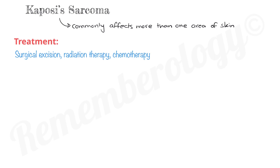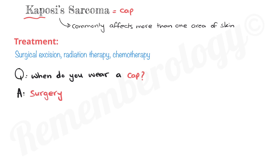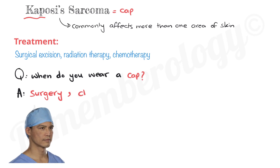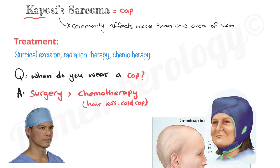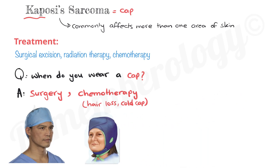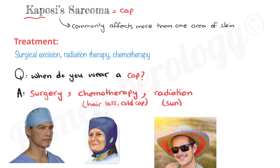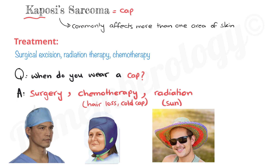Let's see how we can remember the treatments. Kaposi's sarcoma equals 'cap' — so when do you wear a cap? First, in surgery, whether you are the patient undergoing surgery or the surgeon. A patient also wears a cap in chemotherapy, either because they've lost their hair or as a cold cap — a cap filled with ice or coolant that may reduce or prevent hair loss during cancer treatment. Another reason to wear a cap is to protect from the radiation of the sun. So remember, when do you wear a cap? Surgery, chemotherapy, or radiation — meaning the treatment for Kaposi's sarcoma is surgical excision, radiation therapy, and chemotherapy.